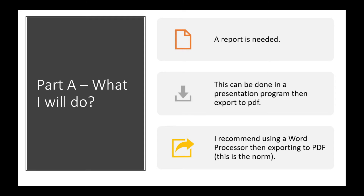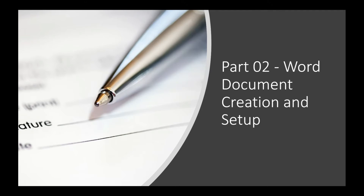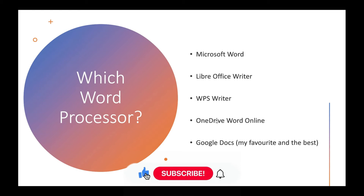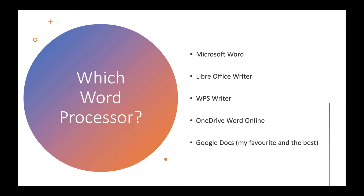A report is needed for Part A. This can be done in presentation software like PowerPoint and exported to PDF, but I highly recommend using a word processor and then exporting to PDF. You don't have to use Microsoft Word. I do not recommend anyone do their entire assignment in Microsoft Word offline — if you're going to use Microsoft Word, please use Word Online. Your school typically gives you OneDrive storage for free with Office 365, and it backs up your work automatically.